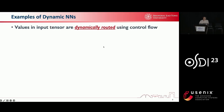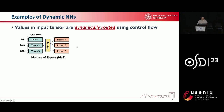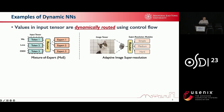Now let me show some examples about dynamic neural networks. Basically, in a dynamic neural network, values in input tensors are dynamically routed with the help of control flow. The first dynamic model is an MOE-based model. The tokens of a language sequence or the whole sequences are routed to different experts for processing. It is the most commonly seen dynamic model. The second example is a model for adaptive super resolution. It contains multiple super resolution modules. The whole image is first split into multiple sub-images, also known as patches.